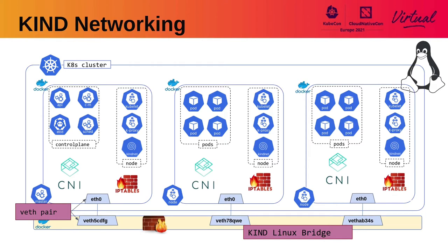For this presentation we are going to focus on networking — how Kind implements networking. Kind by default uses Docker, and Docker networking creates a Linux bridge. All the container nodes are attached to this Linux bridge using veth interfaces. On top of that we have iptables rules in different layers. Docker uses iptables to implement forwarding from the host to the containers, and the Kubernetes cluster uses iptables via kube-proxy to create the services abstraction for networking, and to enable pod-to-pod communication.